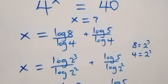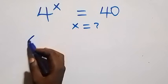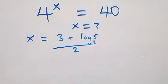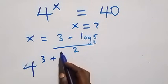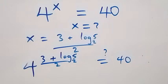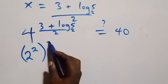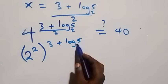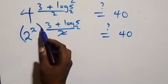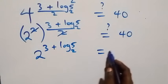Now let's check if this satisfies the given problem. We substitute the value of x, which is x equals to 3 plus log base 2 of 5 all over 2. What we have becomes 4 raised to the power of 3 plus log base 2 of 5 over 2. Is this equal to 40? We express 4 as 2 squared, raised to the power of 3 plus log base 2 of 5 all over 2. The 2 in the power multiplies with the 2 in the denominator and they cancel, leaving 2 raised to power 3 plus log base 2 of 5. Is this equal to 40?